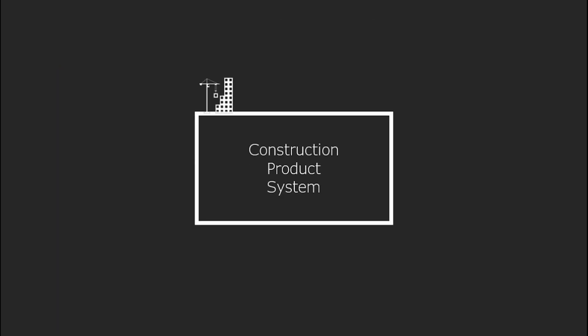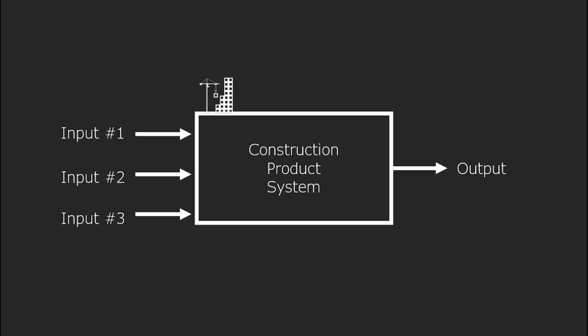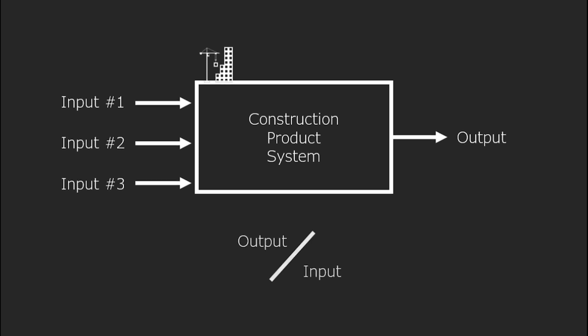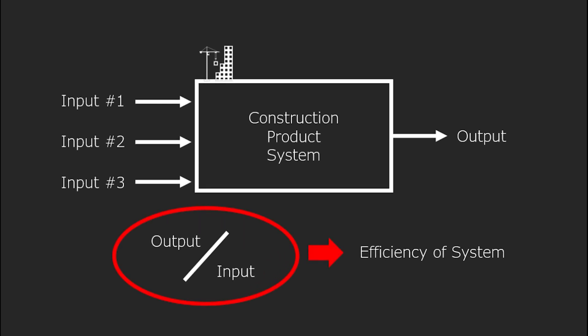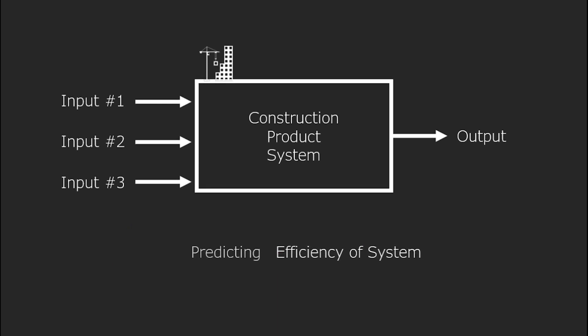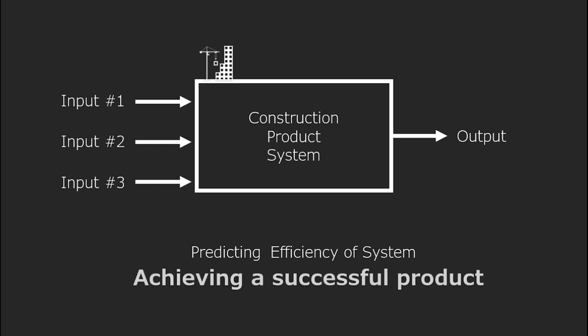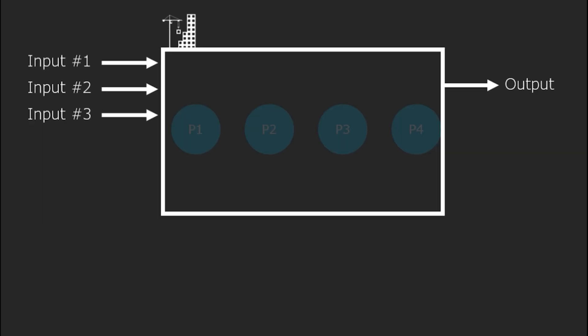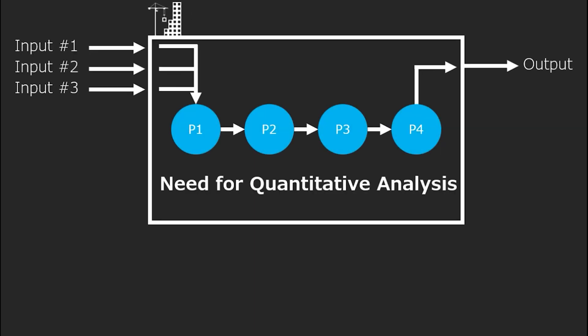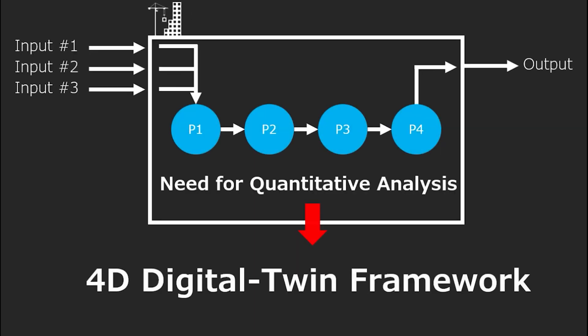A construction project is a production system, and output is derived according to the inputs. Therefore, accurate and reliable prediction of performance is very important. We propose a 4D digital twin framework that supports optimized decision making in construction projects and aim to solve this problem.